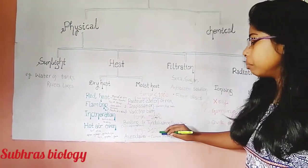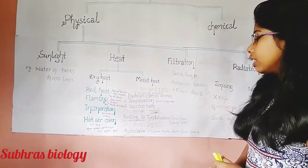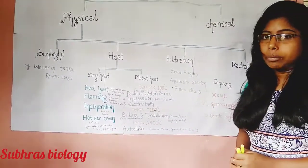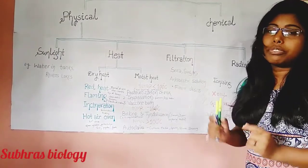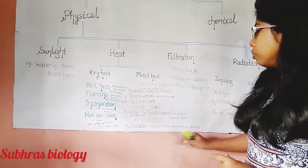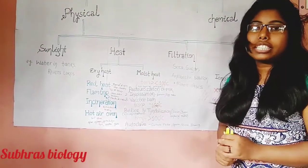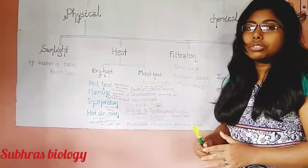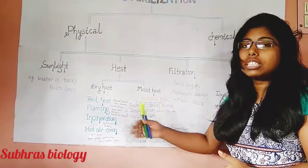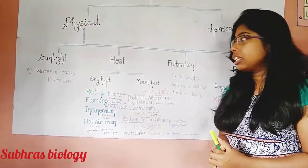At a temperature greater than 100°C, the autoclave is used. It operates at 121°C. Culture media, gowns, gloves, and dressings — things which would be damaged in the hot air oven — are sterilized in the autoclave.